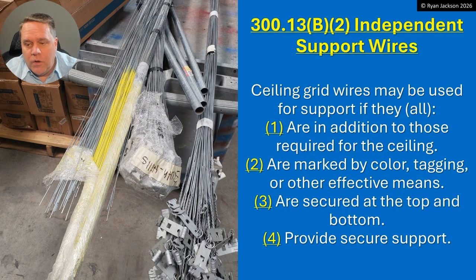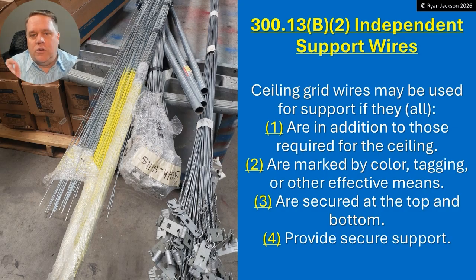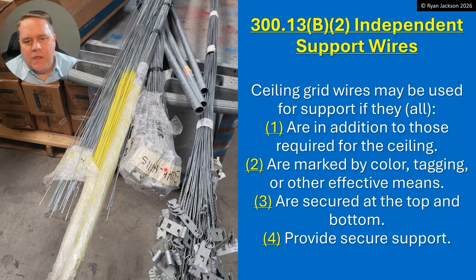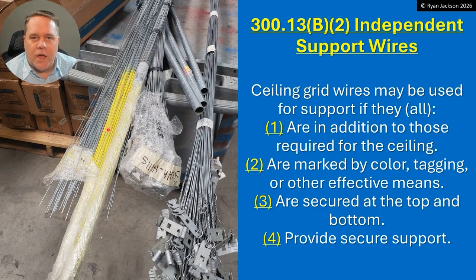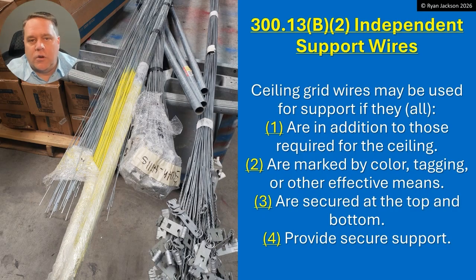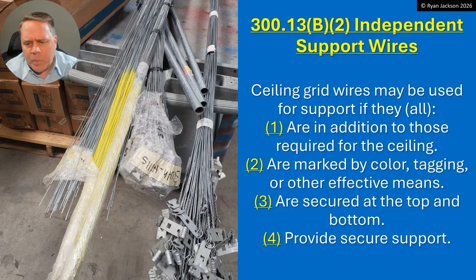You can use ceiling grid wires, just not the ceiling grid wires that hold up the grid. You have to buy your own and install them yourself. Your wires also have to be marked by color, tagging, or other effective means. Make sure you do this as soon as you buy the wires — paint them red or yellow or whatever — so they're distinguishable from the other wires above the ceiling. That way the authority having jurisdiction can see that it's the electrician's wire, not the grid contractor's wire. Better to do this before you put it up than get called on it.